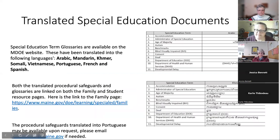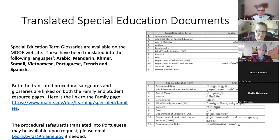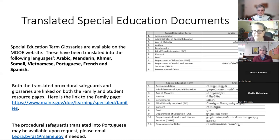Our ESOL team produced some translated documents last spring. Massachusetts had great special education term glossaries, and we got those terms translated into Arabic, Mandarin, Somali, Vietnamese, Portuguese, French, and Spanish — located at a link on our DOE website on both the family tab and the student resources page of special education. If the link doesn't work, you can email me and I'll send you a PDF right after we're done.